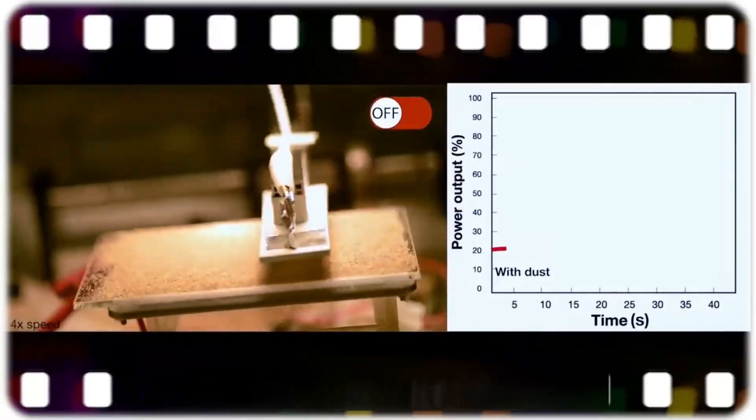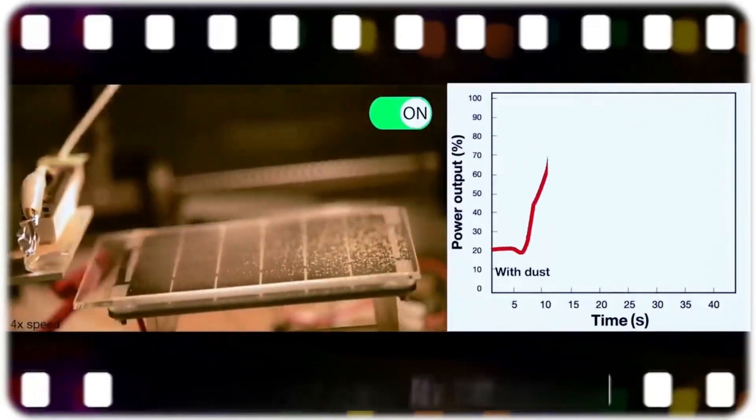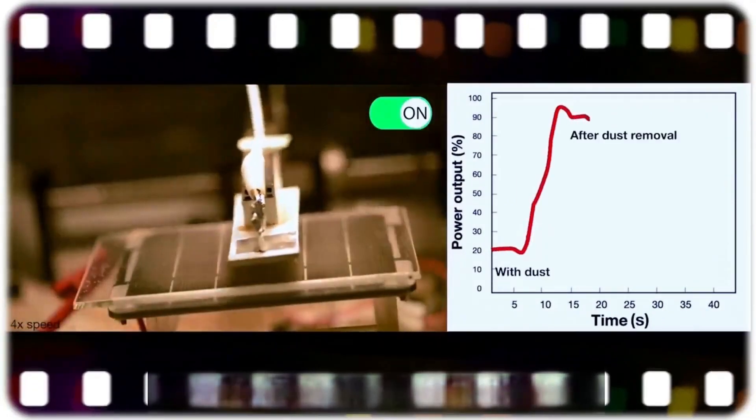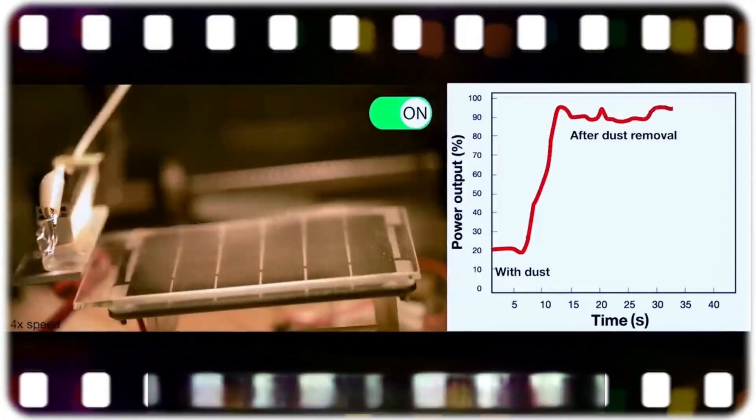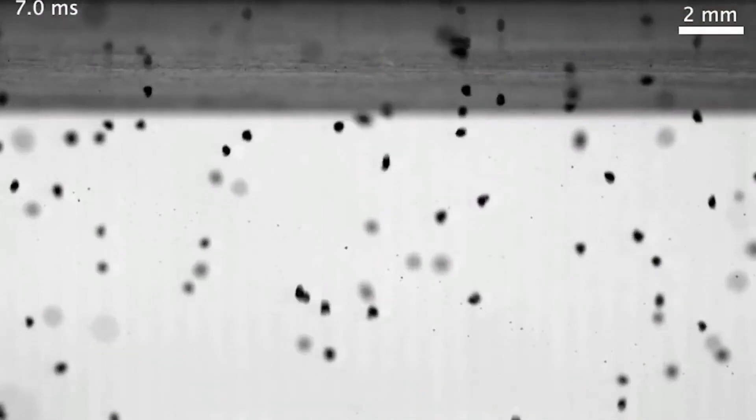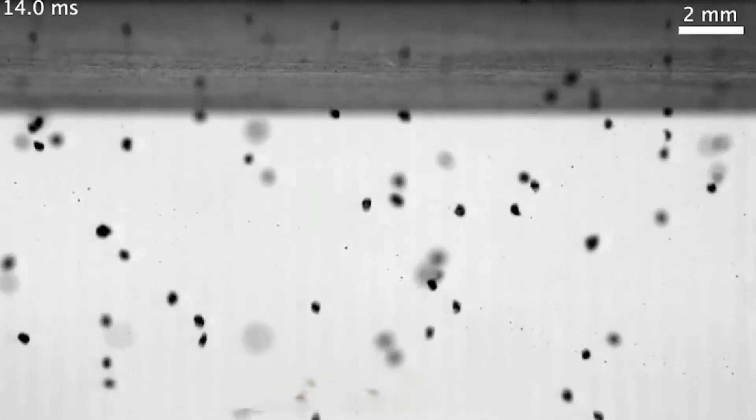By charging the modules with static electricity, the electrostatic charge is transferred to the sand particles, and the sand particles are charged with the same kind of electricity. According to the principle of electrostatic repulsion, the dust will be repelled.